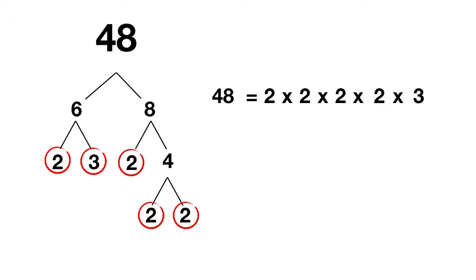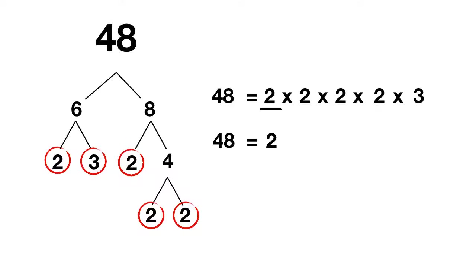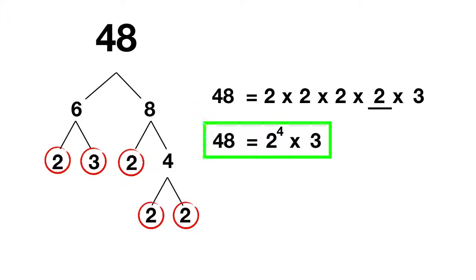So another way of writing this is that 48 equals these 2's being multiplied together once, twice, 3 times, 4 times — so we write it as 2 to the power of 4. Then we finish this with times 3. This is another way of writing the prime factors of 48.